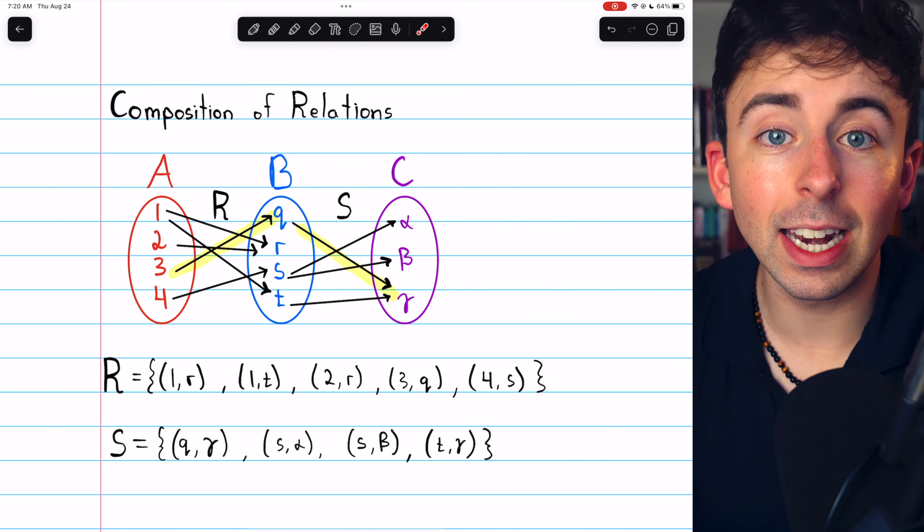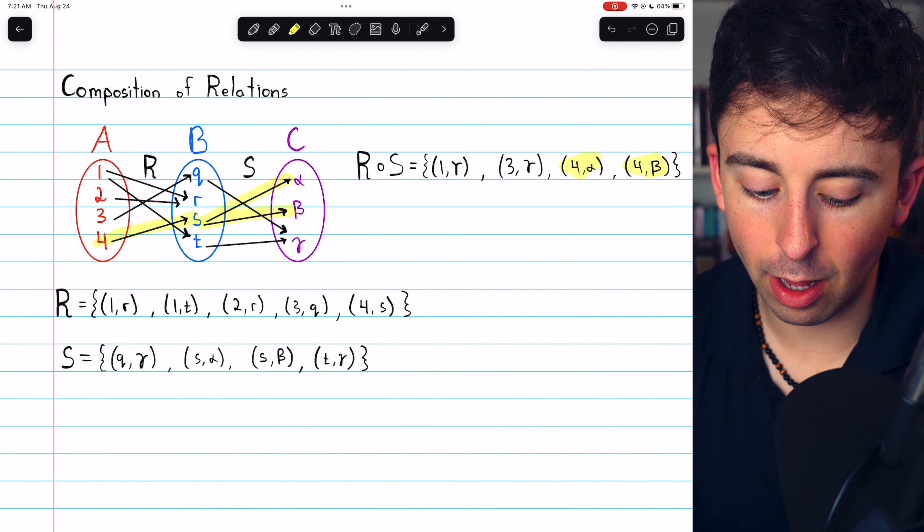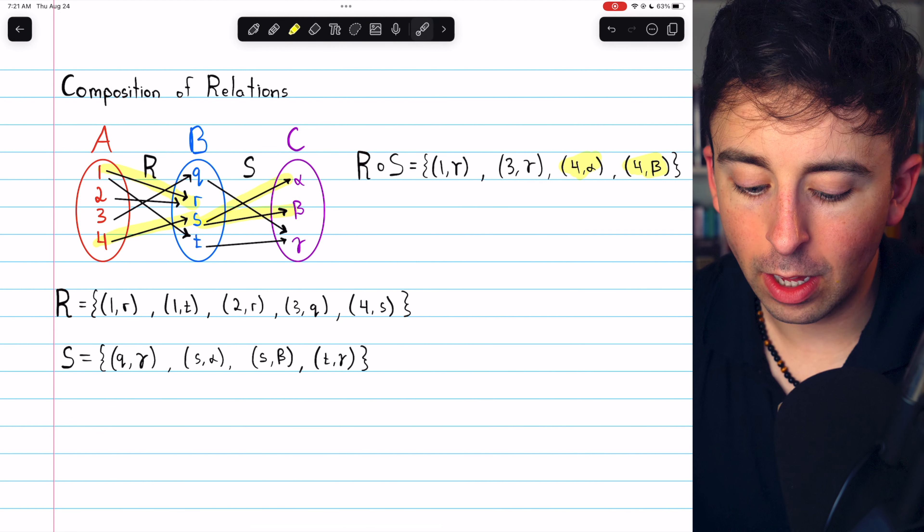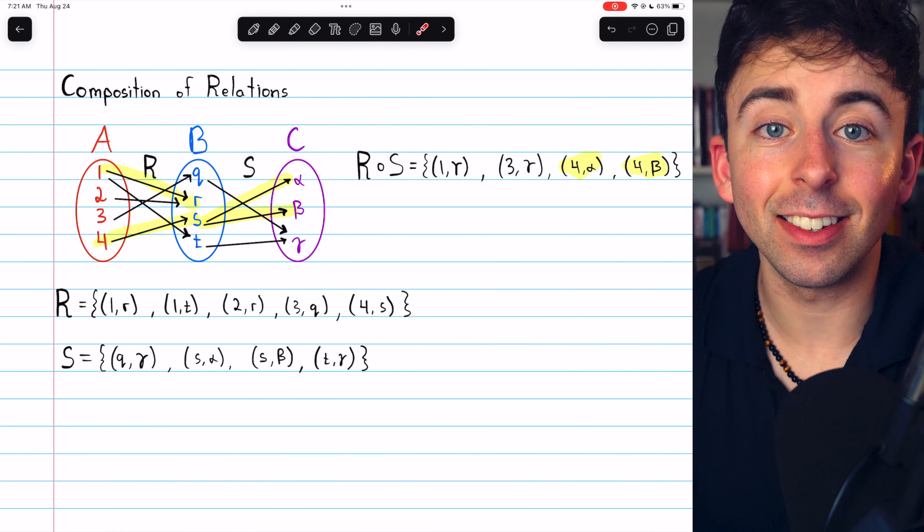Because 4 is related to S, but then S is related to both alpha and to beta. 1 is related to R, but R isn't related to anything in C.